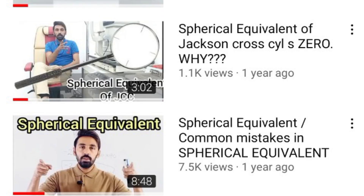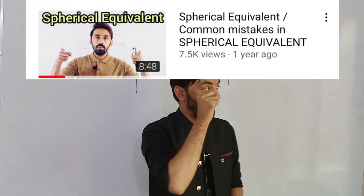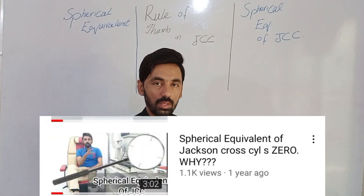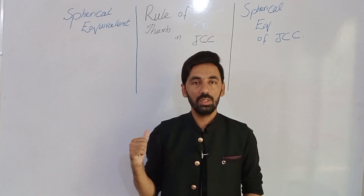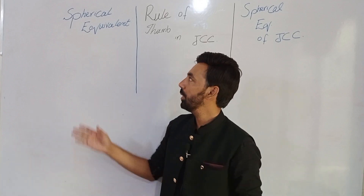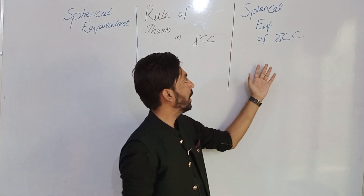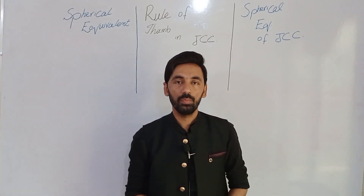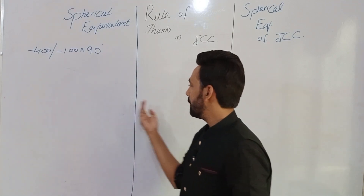I have recorded three different videos — you can see the thumbnails on your screen. The first is spherical equivalent in normal prescription, the second is the spherical equivalent of the Jackson Cross Cylinder, and the third is power refinement and spherical equivalent, which is actually the rule of thumb in the Jackson Cross Cylinder procedure. In this video I will compile all three, because students always make mistakes and get confused between these three procedures.